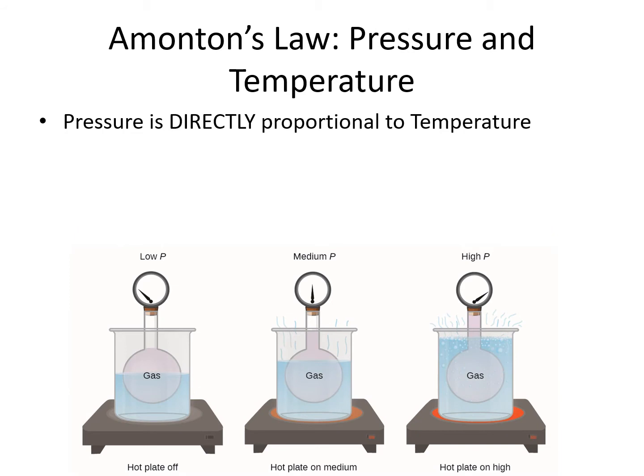Our first gas law is Amontons' law. Amontons' law tells us that pressure and temperature are directly proportional. So as one goes up, the other goes up; as one goes down, the other goes down. We could write this as a proportionality equation — pressure is proportional to temperature — or we could write it as an equality equation: pressure is equal to some constant times temperature.